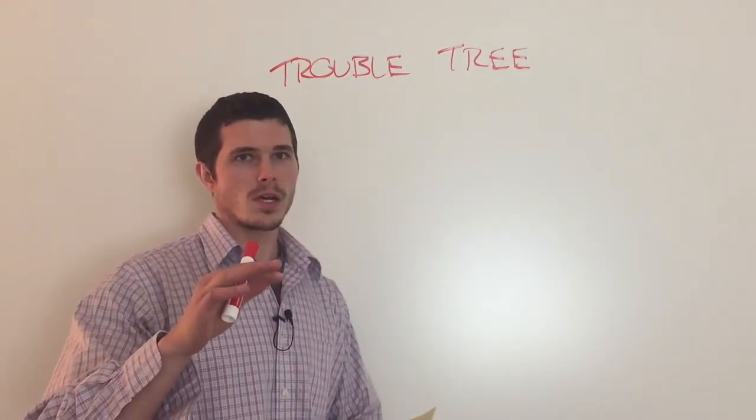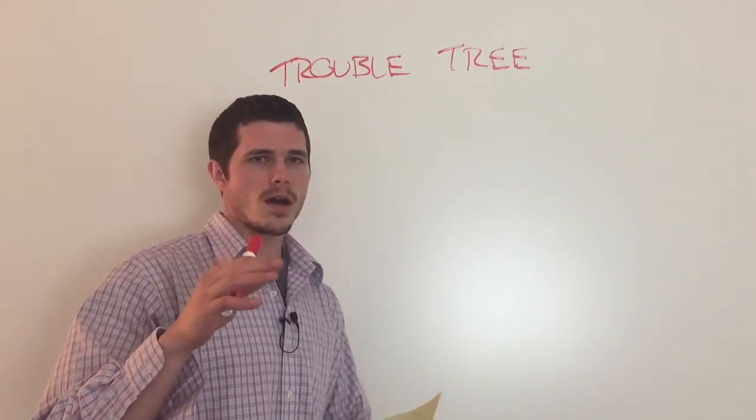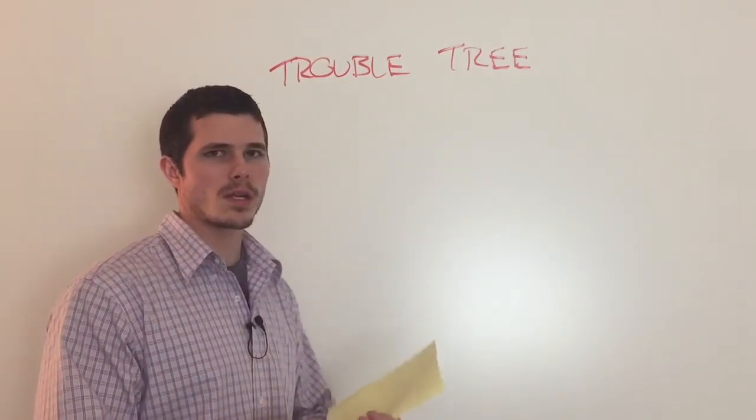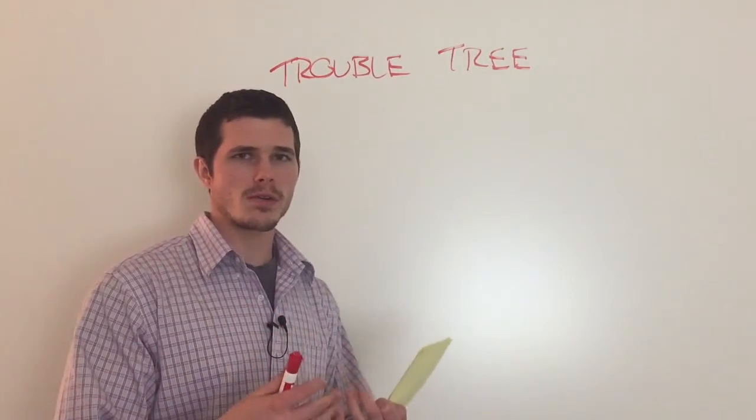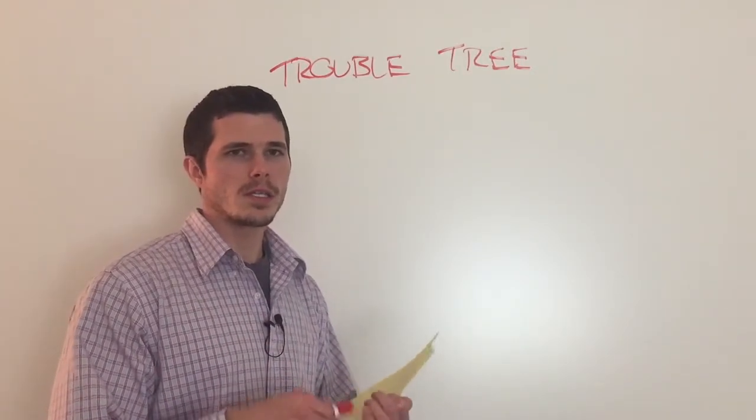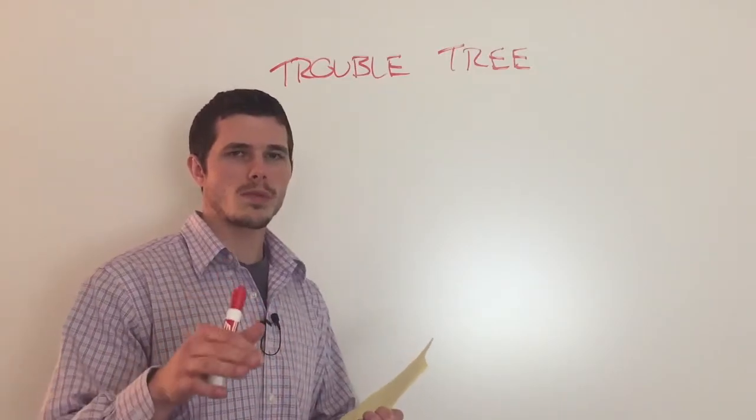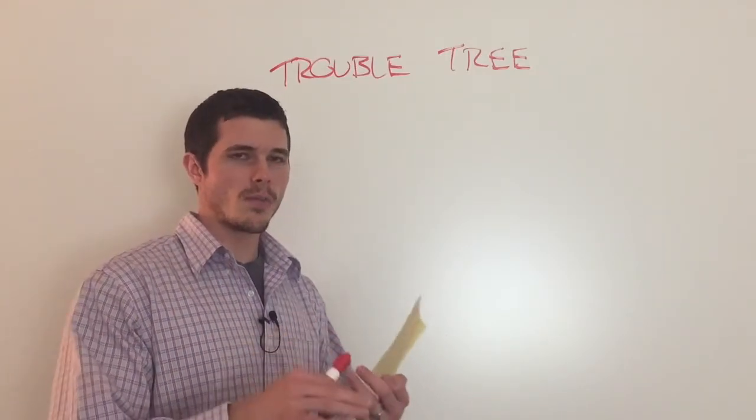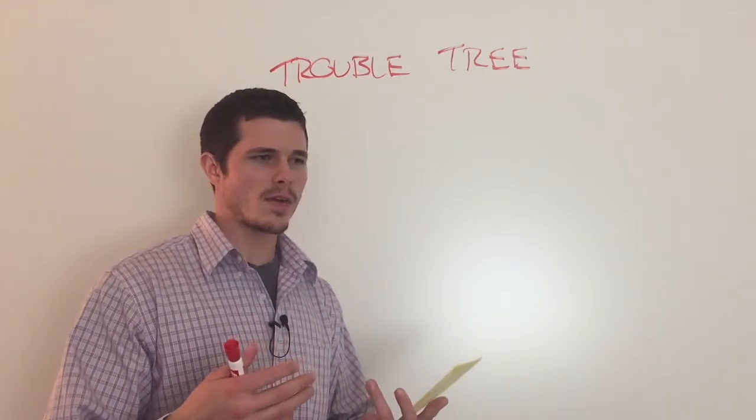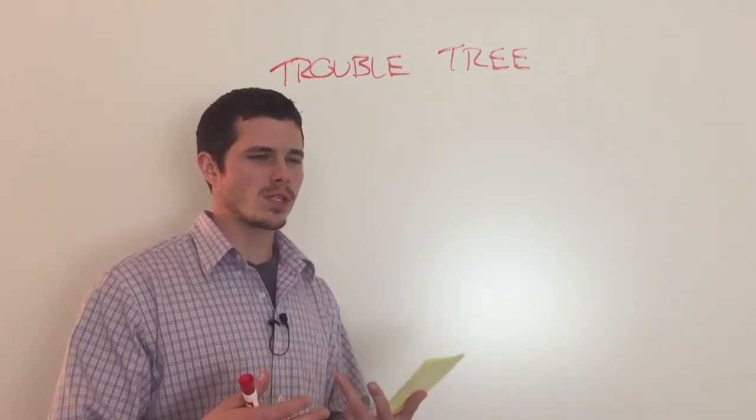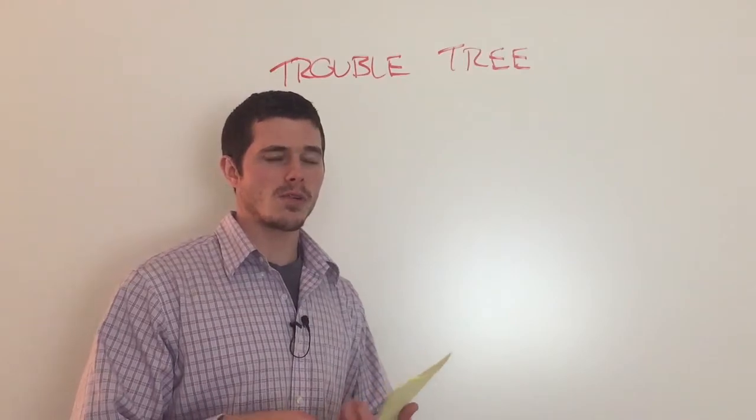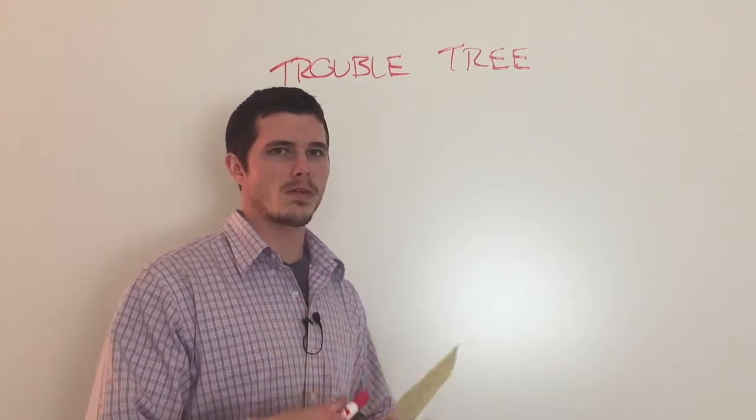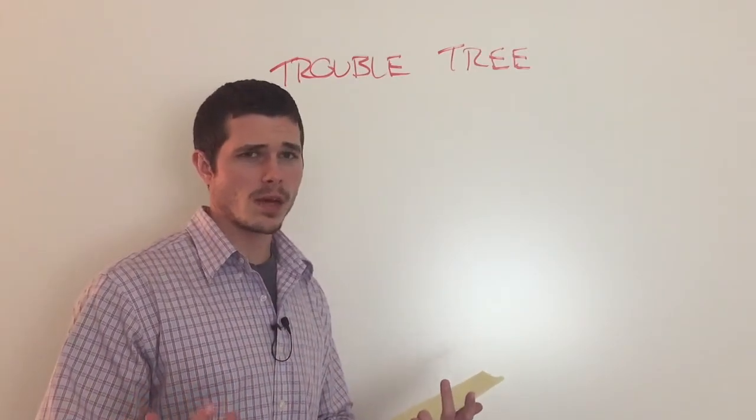This exercise called the Trouble Tree is a kind of mind map that you can help walk the patient through. And then you can actually photocopy it at the end of evaluation or even the second or third treatment session to help them better understand what could be bothering them and what could be making their pain worse. So this way it's on paper and they have no question. It seems so simple when you do this with a patient, it really sets off a light bulb in their head as to what could be causing their issue and they become more aware of it.